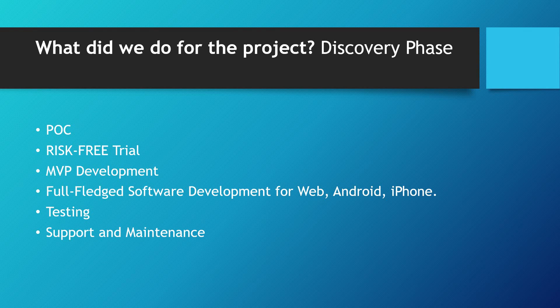We do POCs for the project. Someone might ask what you did in the discovery phase — we did POCs. First we prepare the MVP of the project, an MVP or POC, which is a dummy project kind of thing. We do POCs, risk-free trials, and MVP development. Then full-flash software development for web, Android, and iPhones. Then we do testing, support, and maintenance. These are the things we did for the project, from the discovery phase till now.